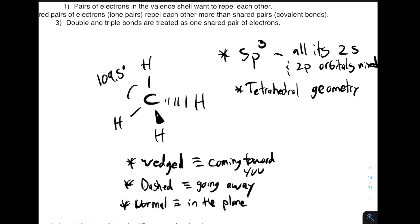Hopefully that's a little familiar. This 3D spatial geometry will be more important later in the chapters. It's easy to get confused by, and it is a little tricky — this is definitely where 3D models start coming in handy. If you put together your 3D model kit and build out the methane molecule, you would pretty easily see the 109.5 degrees and how spatially this makes a lot of sense.